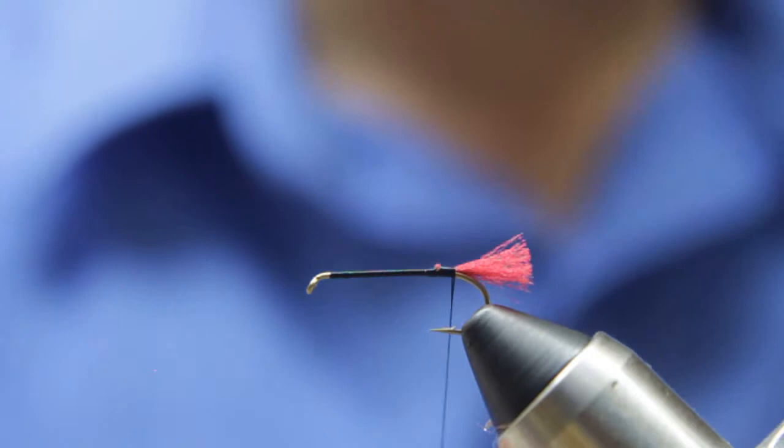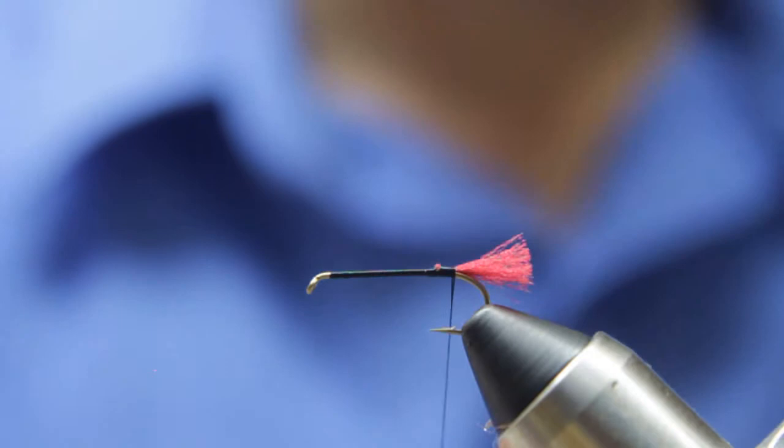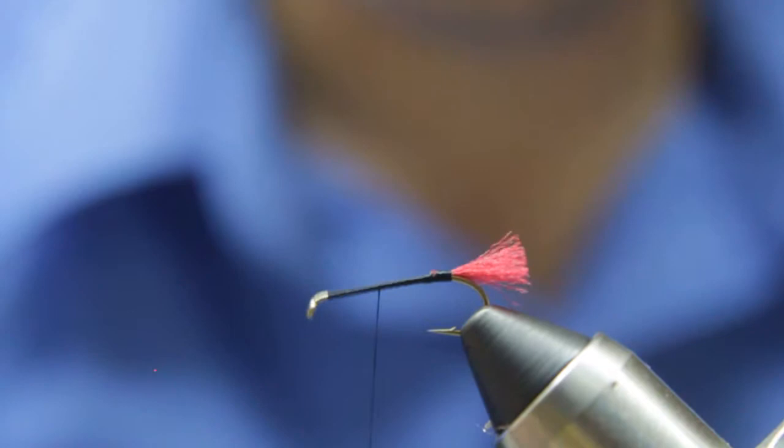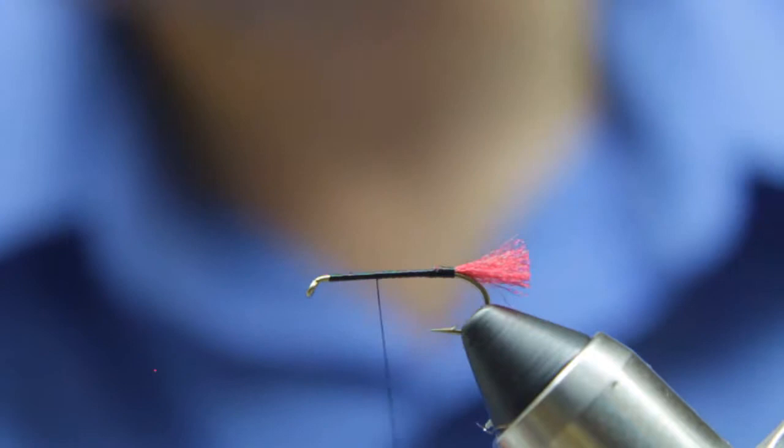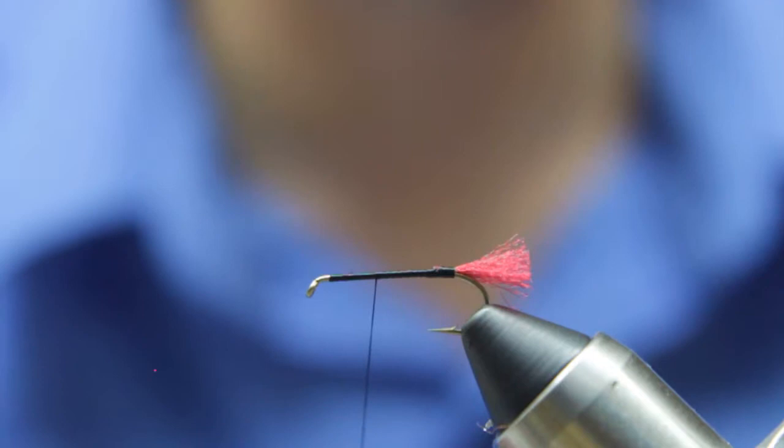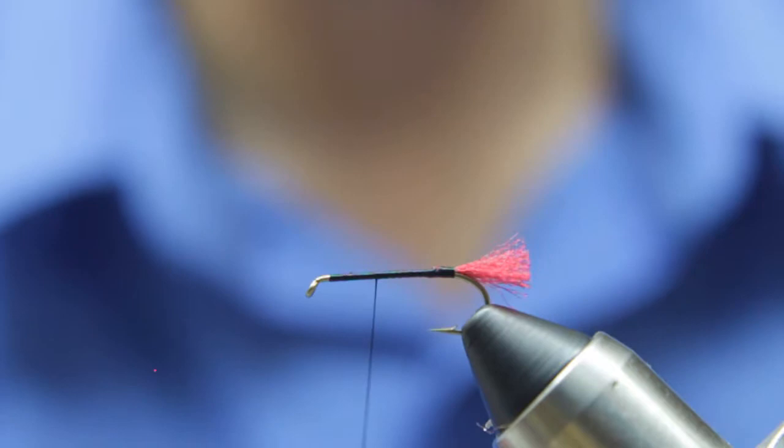And now I'm going to wrap my thread about two-thirds of the way up the shank. I guess I should say what hook I'm using too. This is a TMC 5263. The actual recipe in the fly fishing and tying journal recommended a 2XL hook, which would be a 5262. But I like the extra eye length I get from the 5263, so that's what I'm going to use.